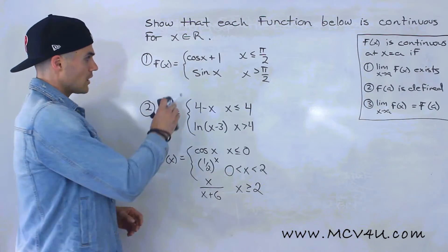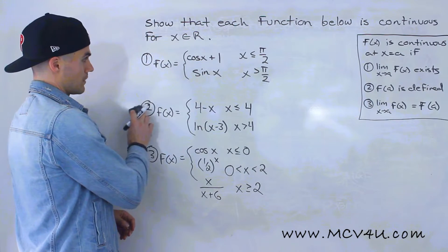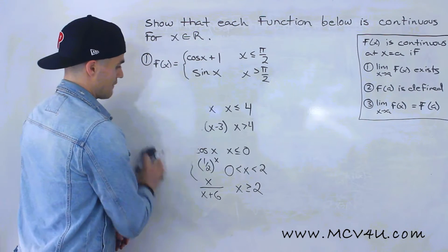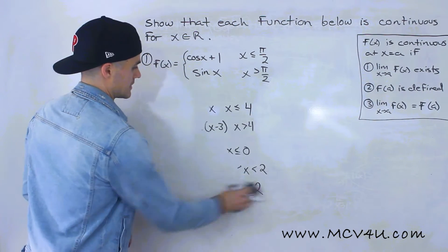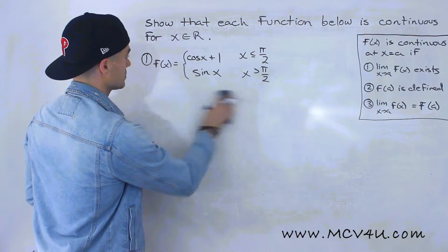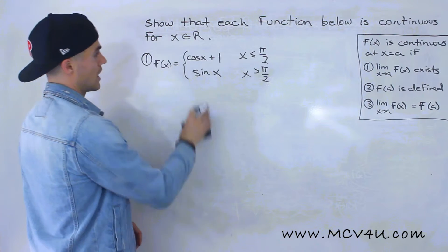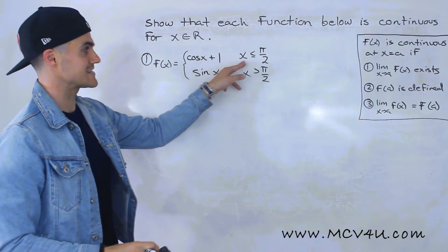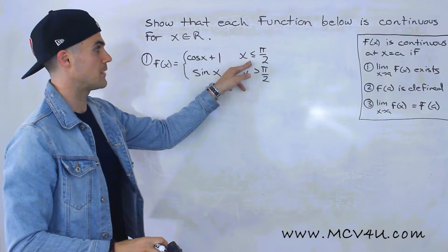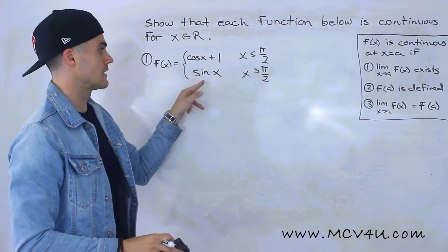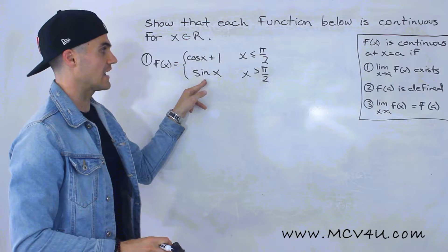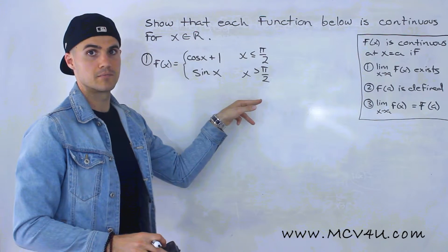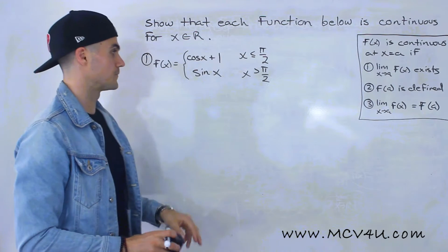Starting off with number one, we have f(x) equals cos(x) plus one when x is less than or equal to π/2, and sin(x) when x is greater than π/2.